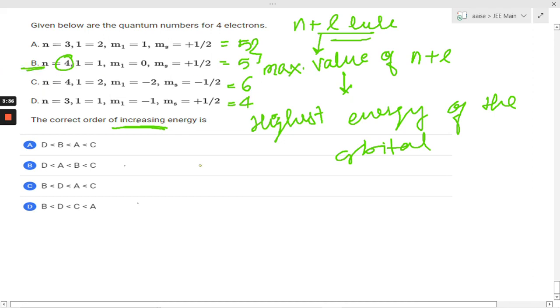So the order will be C greater than B greater than A greater than D. So from here, C has the highest, D has the least. So option B is the correct answer.